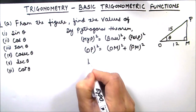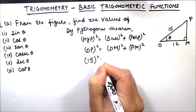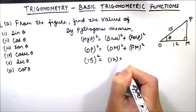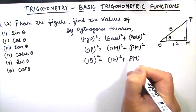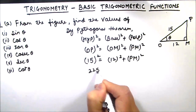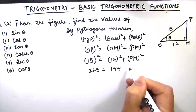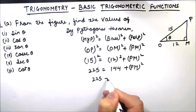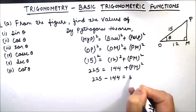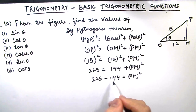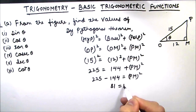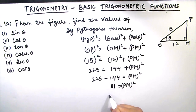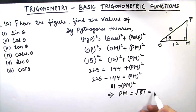OP is given as 15 and OM is given as 12, and we need to find PM. So 15 squared is 225, and 12 squared is 144. So 225 minus 144 is equal to PM squared. 225 minus 144 is 81, so PM squared is 81. This gives us PM as the square root of 81, which is 9. So the length of the perpendicular is 9.